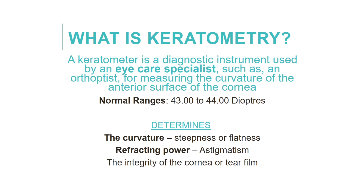So what is keratometry? A keratometer can be used by eye specialists in measuring the curvature of the anterior surface of the cornea, particularly for assessing the extent and axis of astigmatism. In the average eye, keratometry readings, also known as K readings, range within 43 to 44 diopters. Anything less than 40 and more than 47 diopters are considered unusual, therefore should be reconfirmed and retested.